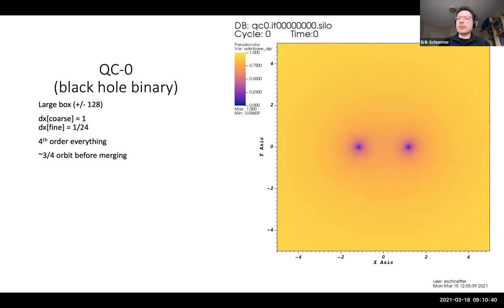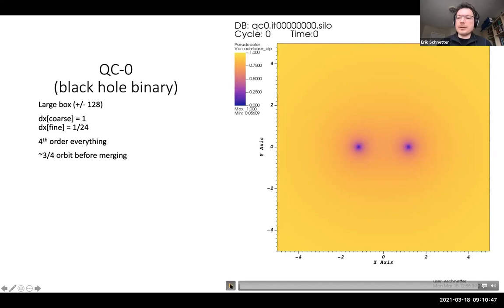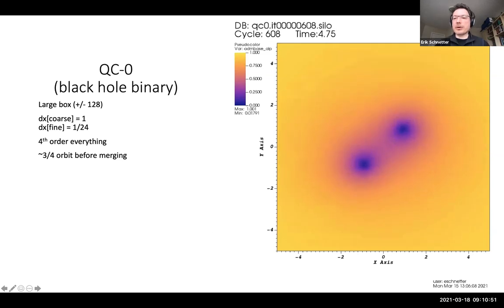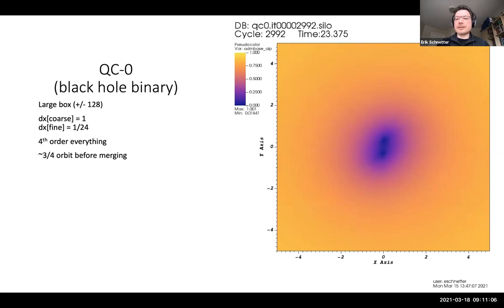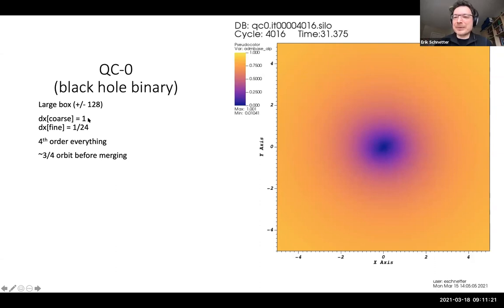I want to show a movie — I know showing a movie is always a bit of a problem in Zoom. This is a GW150914-style simulation. You see two black holes moving in; they do three quarters of an orbit before merging. I'm showing the lapse. In the beginning, the lapse changes because the gauge conditions adapt. There's no horizon finder and no wave extraction. Right about now the black holes merge, and there's a final black hole. That should be a fully fourth-order simulation. The finest resolution is 1/24, the coarse resolution is 1 — that's a nice proof that things actually work.